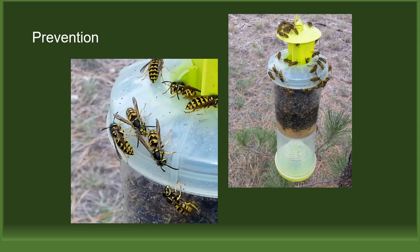The bottom section of the trap has canned cat food laced with fipronil. The entrance and exit holes in the bottom are large enough that the wasp can enter and leave with the bait. In this case you want them to take it back to their nest and feed it to their young in order to destroy the whole nest.